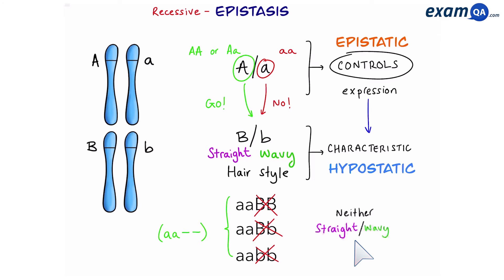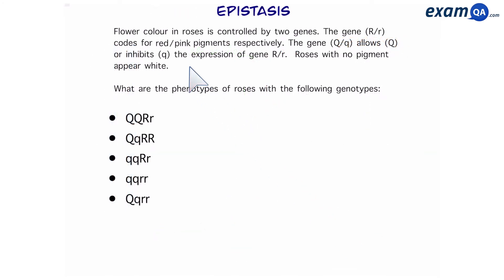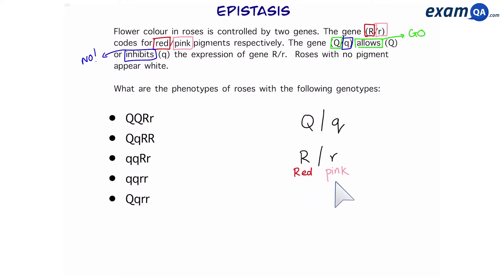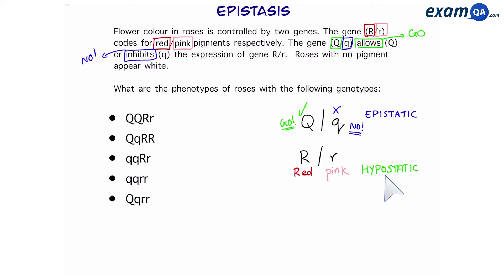Let's do an example and put this into practice. We have two genes: gene R, where big R codes for red flowers and small r codes for pink flowers; and gene Q, where big Q allows the expression of gene R and small q inhibits the expression of gene R. This is again an example of recessive epistasis. Gene Q is epistatic and gene R is hypostatic, and it is the recessive version of the epistatic gene that is preventing expression.